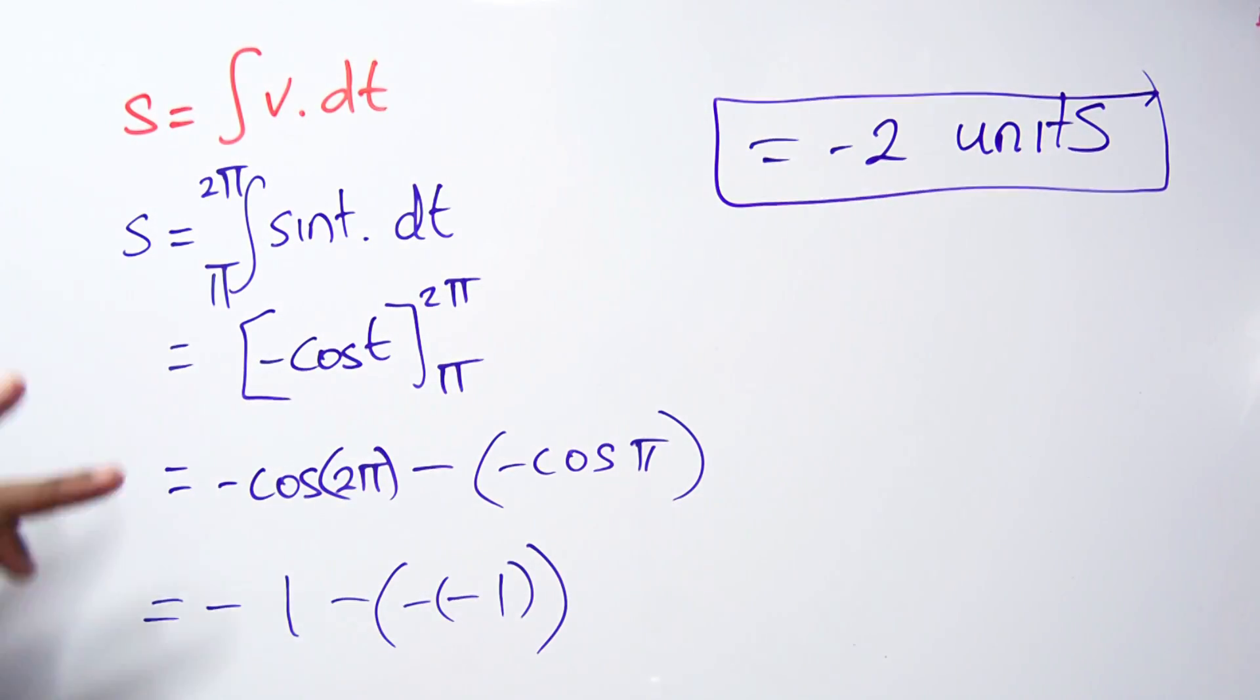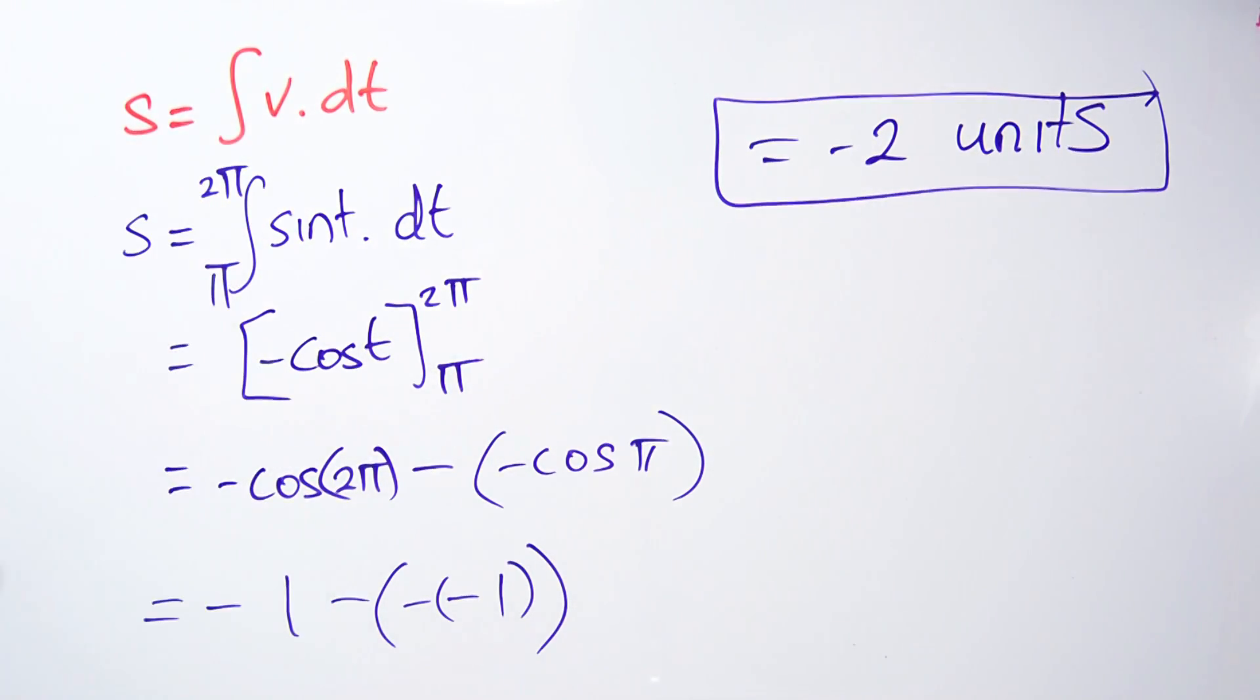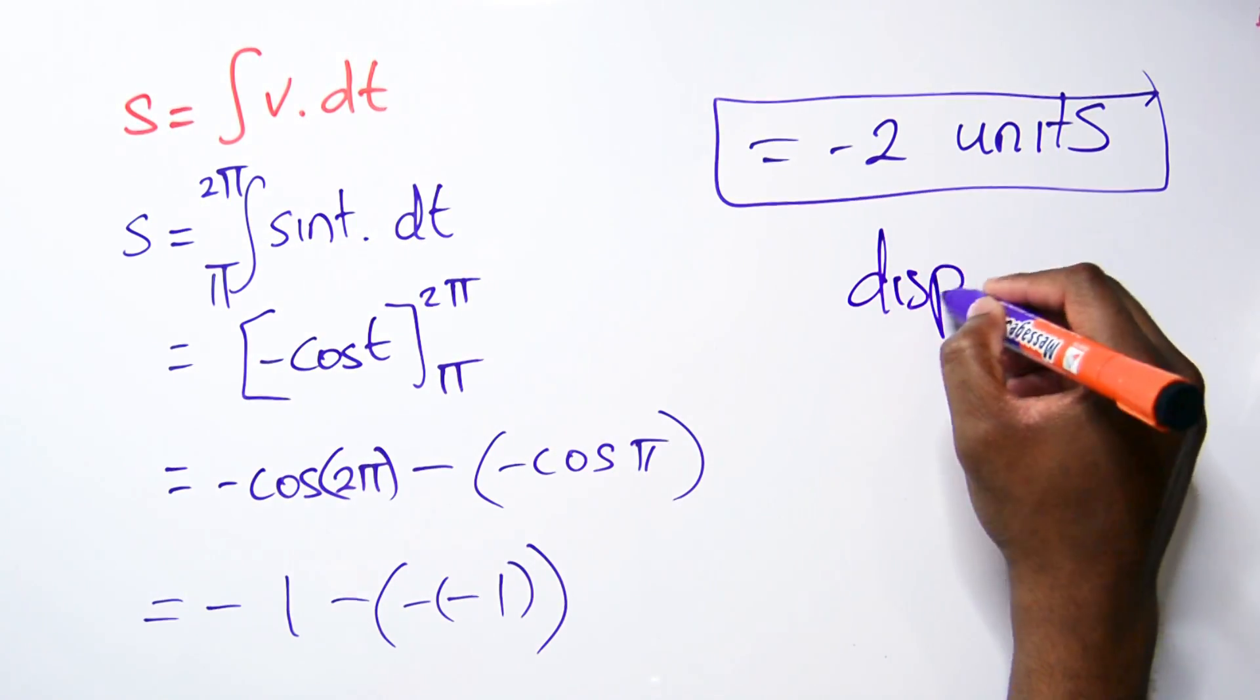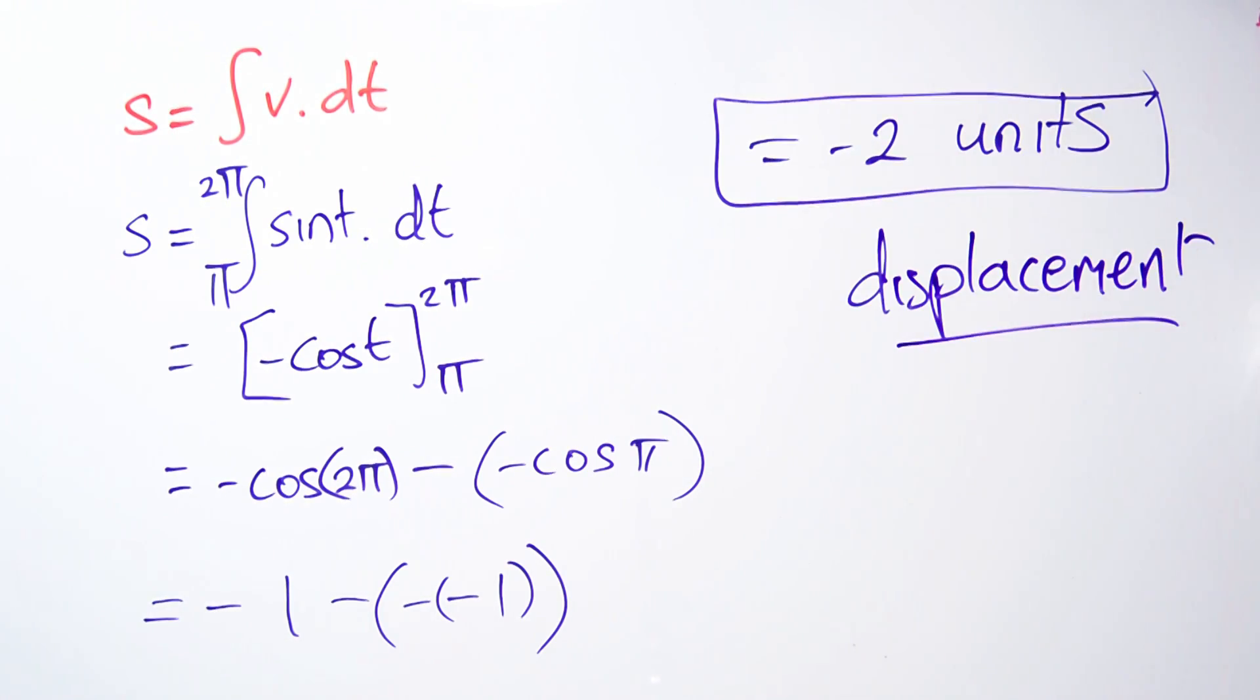This gives us negative 2 units, which makes sense because the velocity during this whole time between π and 2π is negative according to sine. It means we're going in a negative direction. Remember, this is displacement we're talking about, so we expect to get a negative answer.